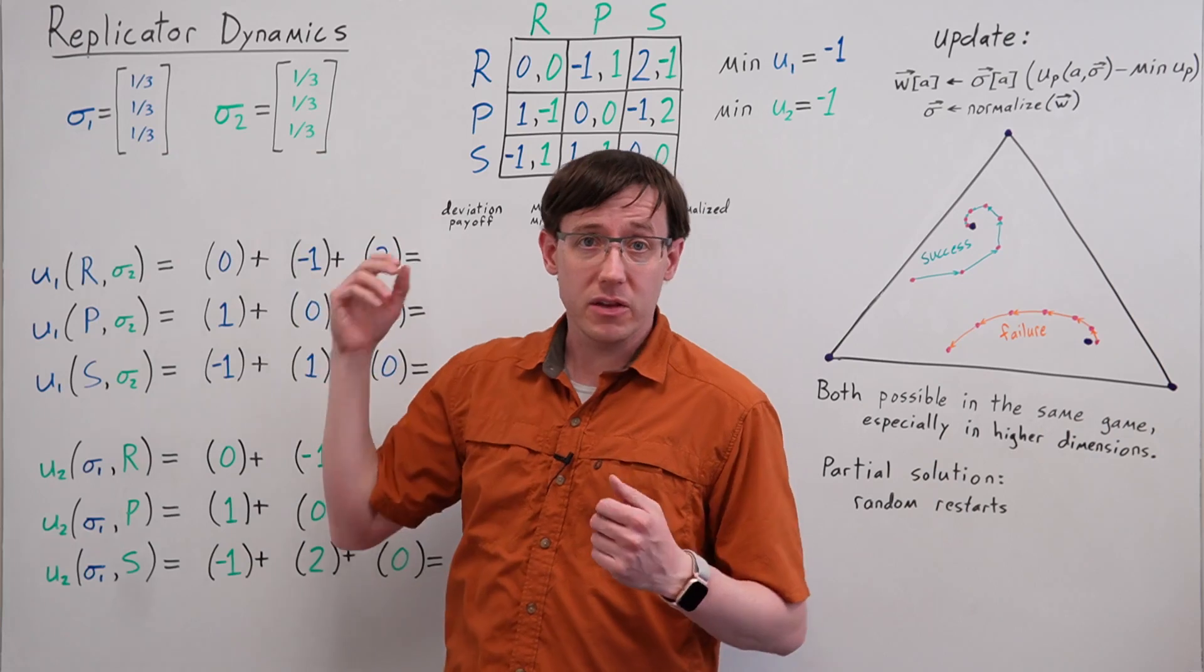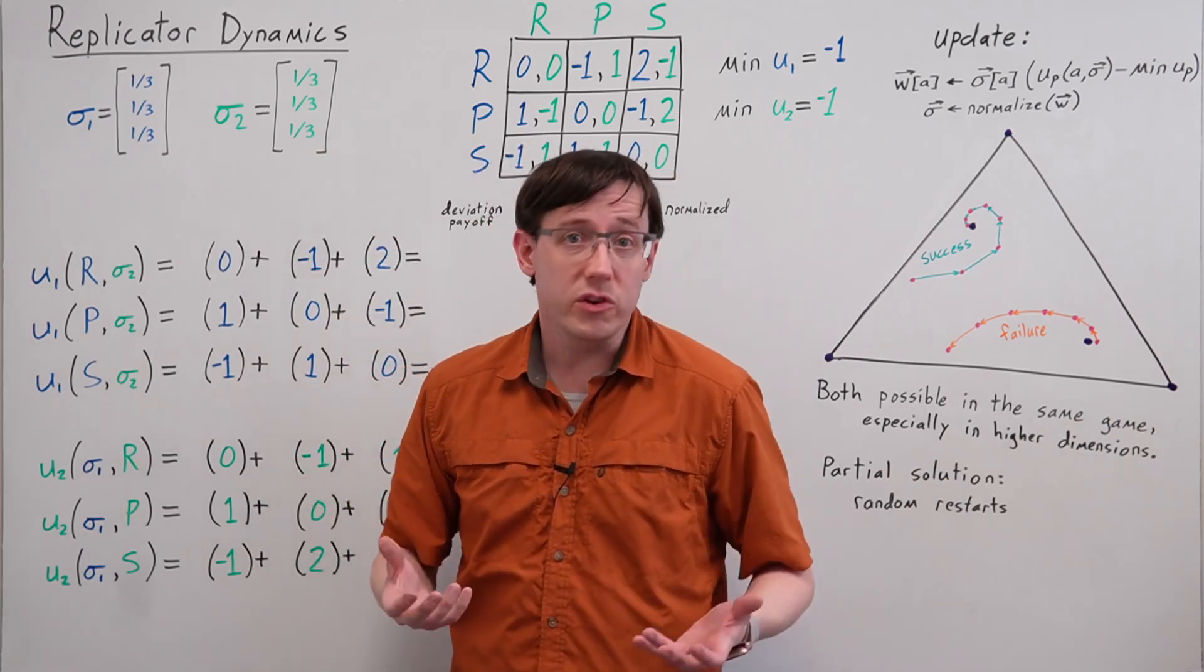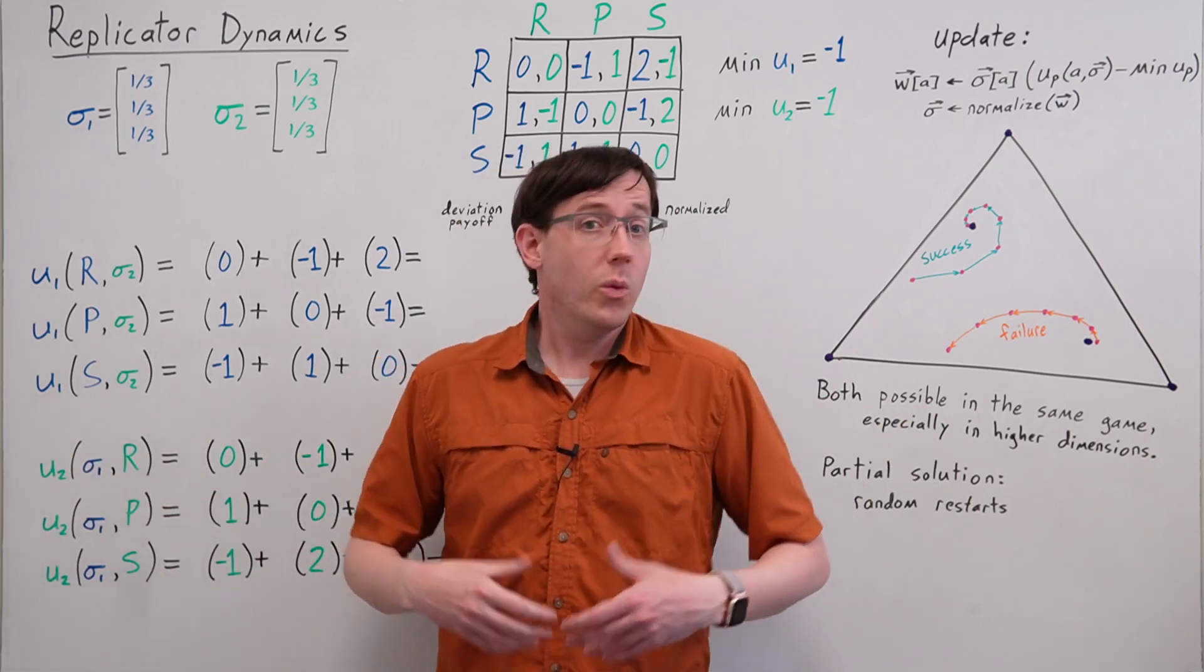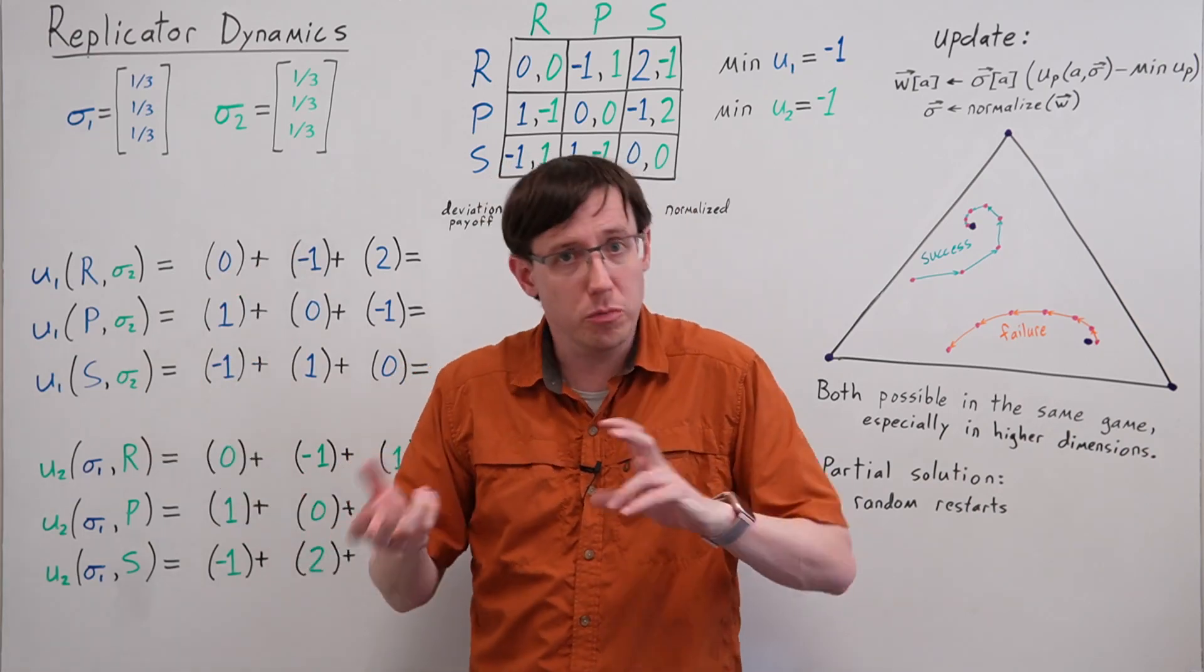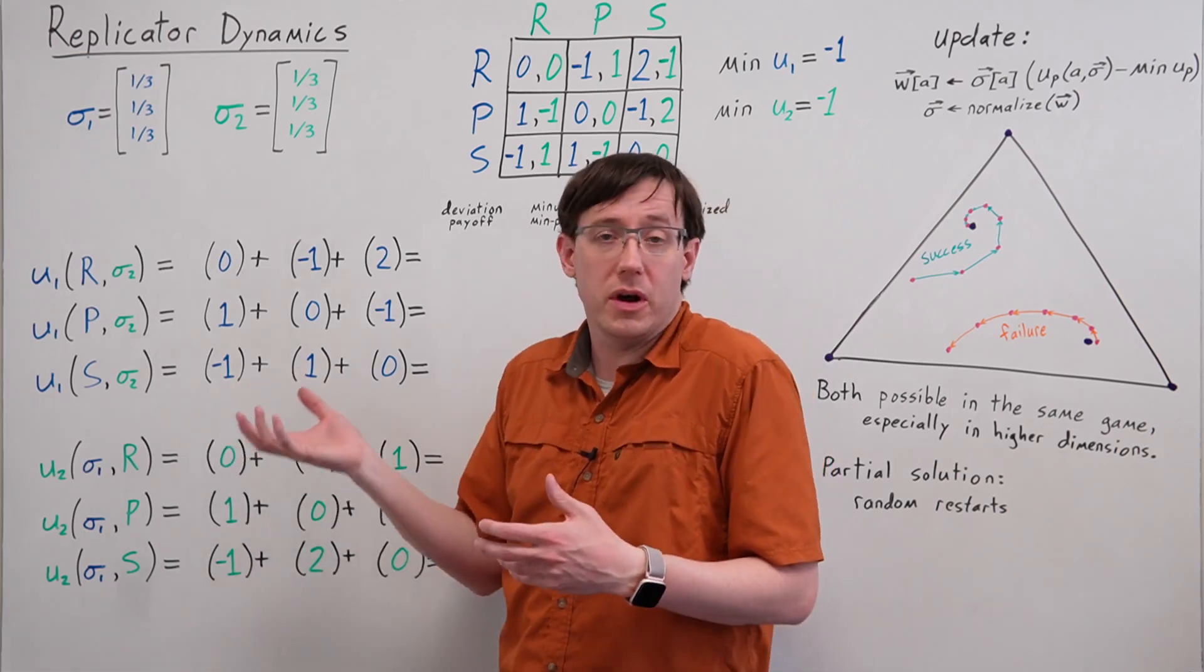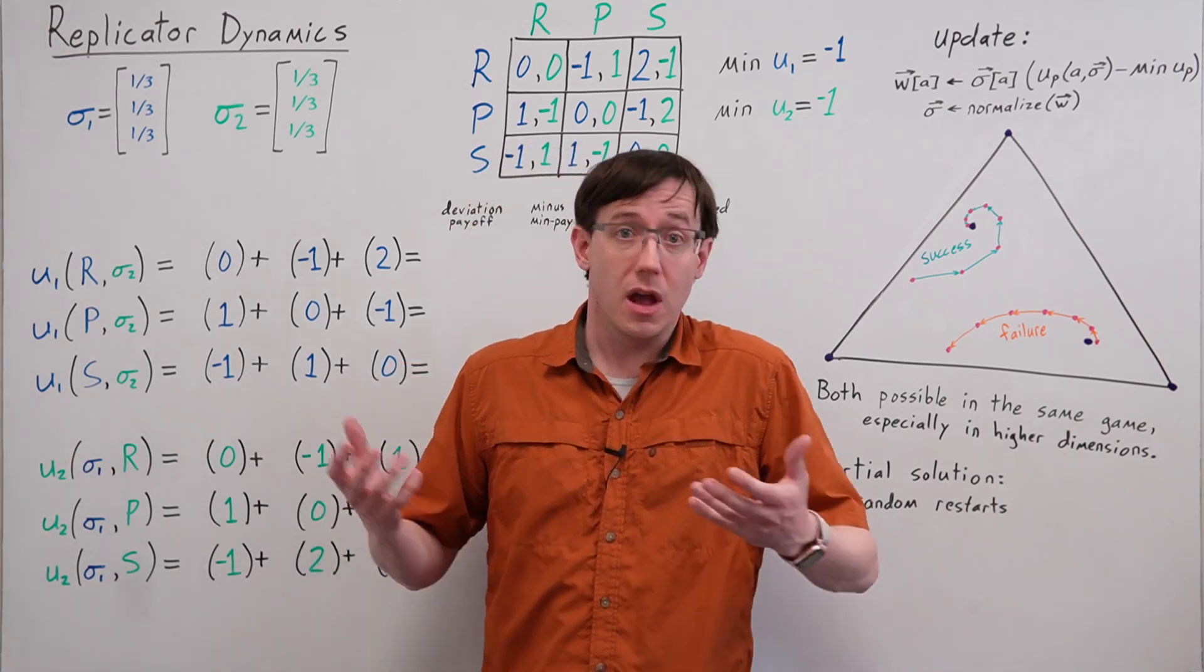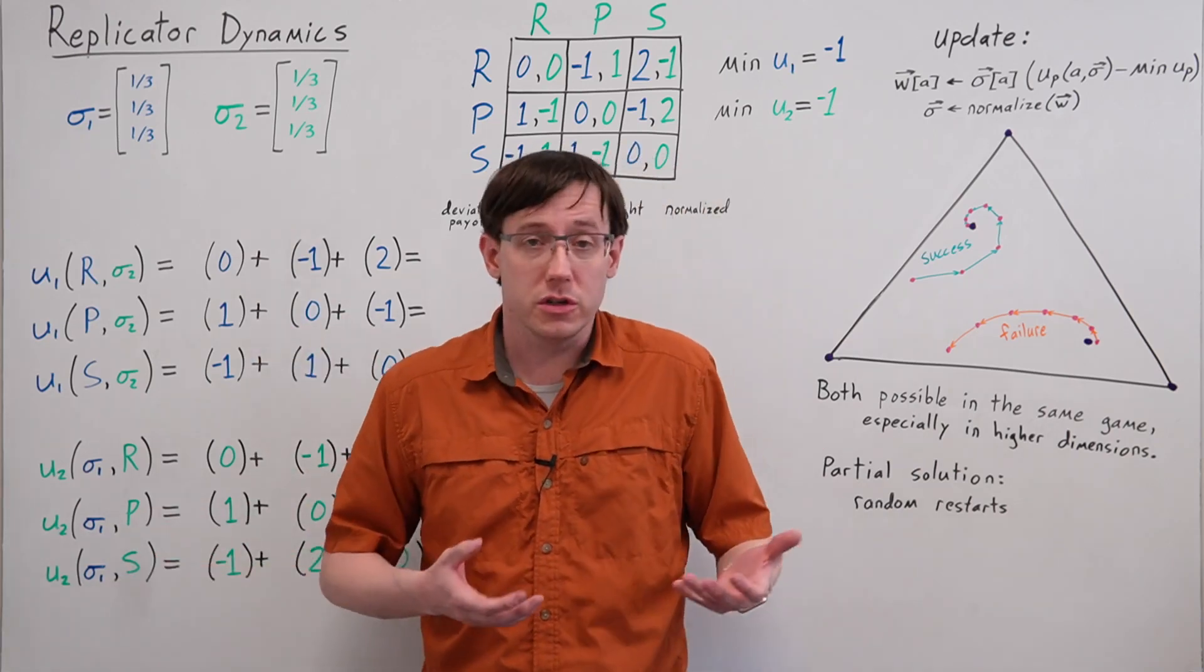The name Replicator Dynamics suggests its origin in evolutionary game theory, where it's used to study the dynamics of a population where various traits are replicating over time. In that context, the mixed strategy probabilities correspond to population proportions for different traits, and the deviation payoffs we calculate correspond to the fitness of a particular trait in the current population. Over time, the population proportion of any given trait changes in proportion to its fitness.